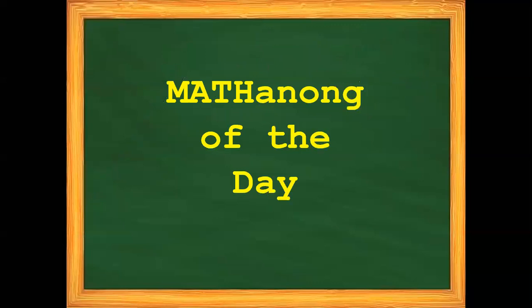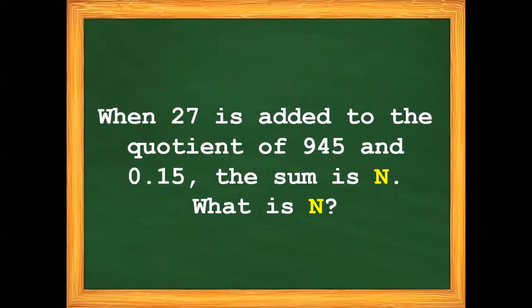For our mat tanong of the day: When 27 is added to the quotient of 945 and 15 hundredths, the sum is N. What is N?